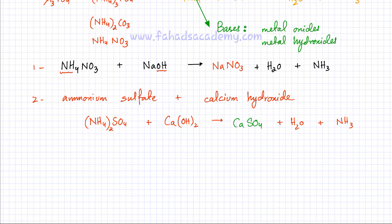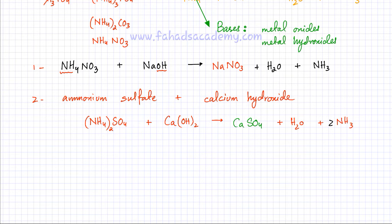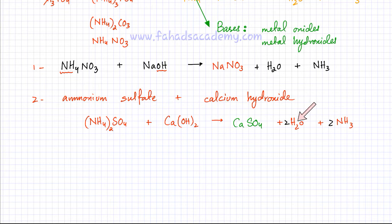Now we need to balance this equation. There are two ammonium ions, so there should be two ammonia gas molecules produced. Calcium is already balanced, and so is sulfate. Counting oxygens: there are 4 in sulfate and 2 in Ca(OH)2 — a total of 6 — so there should be 2 water molecules. Hydrogen is then automatically balanced: 8 from ammonium plus 2 from hydroxide equals 10 on the left, and 4 from ammonia plus 6 from water equals 10 on the right.